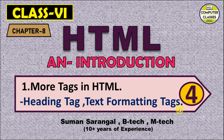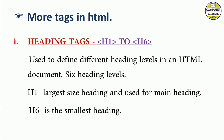First tag is heading tags. We have heading tags from h1 to h6 — that is h1, h2, h3, h4, h5, and h6. This heading tag is used to define different heading levels in an HTML document. h1 is the largest heading and h6 is the smallest. h2 is smaller than h1, h3 is smaller than h2, and so on.